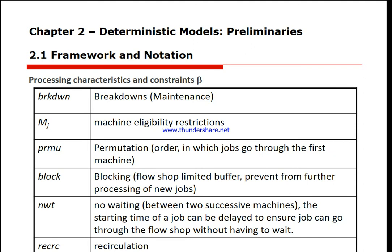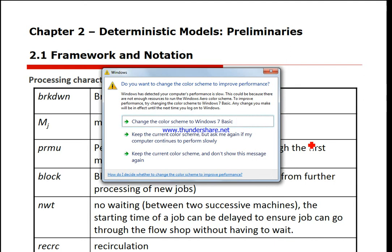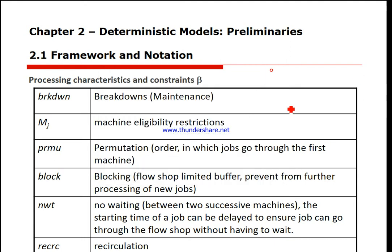Machine breakdown implies that machines are not continuously available. The periods during which a machine is not available are assumed to be fixed as described in the book. If we have identical machines with breakdown, we have machine eligibility restriction M_j — it may appear in the beta field when the machine environment has m machines in parallel. It denotes the set of machines that can process job j. Permutation means first-in-first-out.